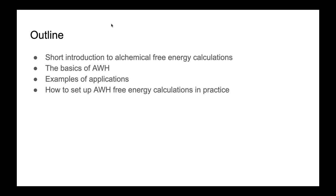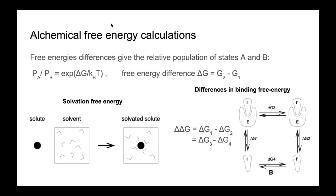What are alchemical free energy calculations? First, what are free energies? A free energy difference is basically nothing more than the relative population between states, expressed as an energy. If one has two states A and B, then the free energy difference can be re-expressed as a ratio of probabilities by taking the exponent of this free energy difference divided by the thermal energy unit. Free energies are basically nothing more than differences — they express differences in populations, which is a very important property to know how much a system is in a certain state versus another.